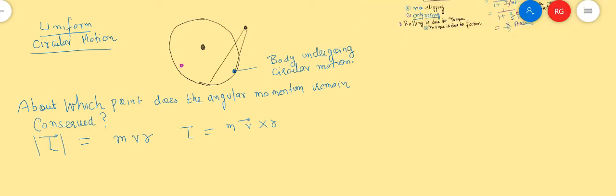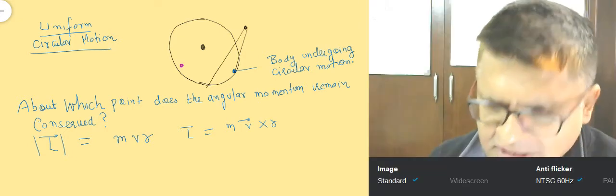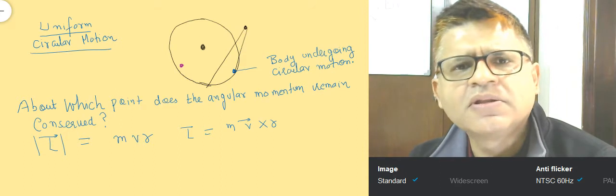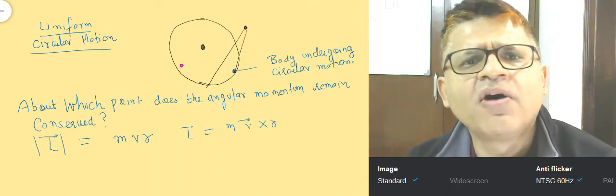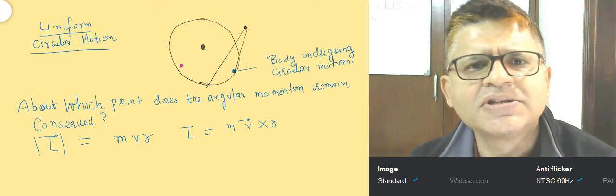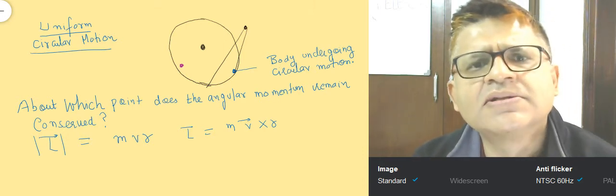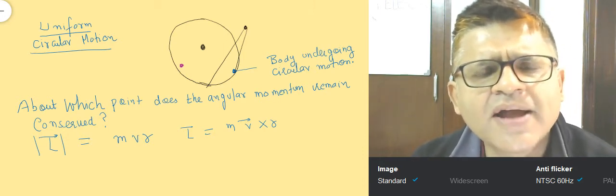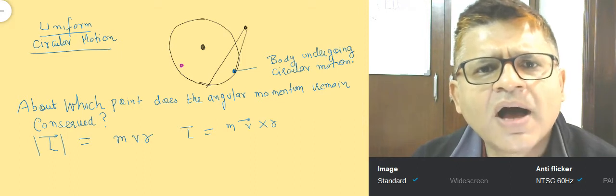Now in this case, in uniform circular motion, velocity is not changing but r is changing, so angular momentum is not conserved. Similarly, you can try and calculate mvr about all the points. What you will find is: